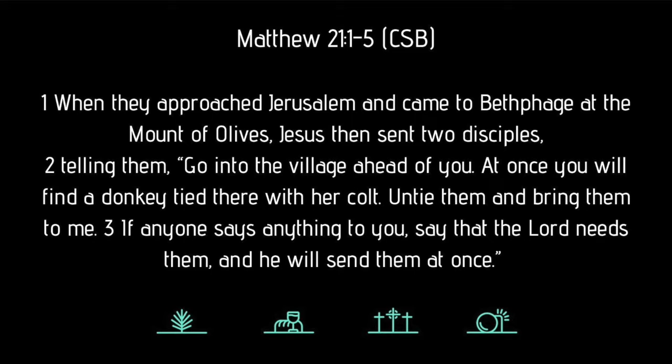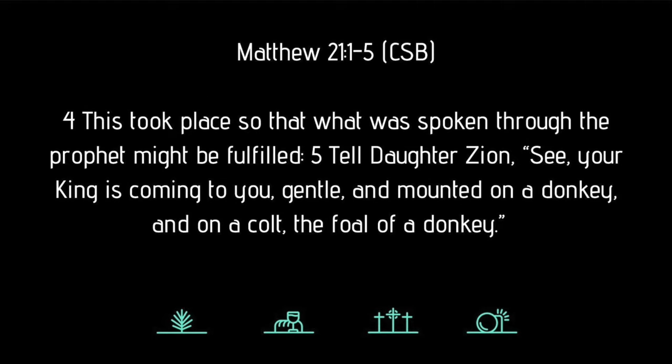Now look here at Matthew chapter 21 verse 1. When they approached Jerusalem and came to Bethphage at the Mount of Olives, Jesus then sent two disciples telling them, Go into the village ahead of you, and at once you will find a donkey tied there with her foal. Untie them and bring them to me. And if anyone says anything to you, say that the Lord needs them, and he will send them at once. This took place so that what was spoken through the prophet might be fulfilled. Tell daughter Zion, See, your king is coming to you, gentle and mounted on a donkey, and a colt the foal of a donkey.